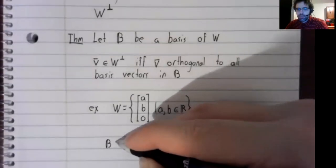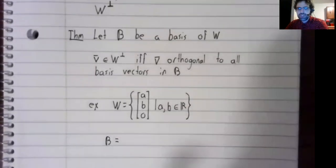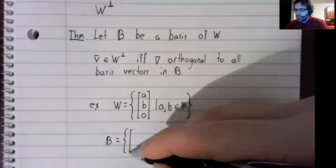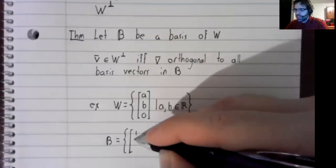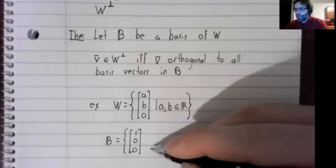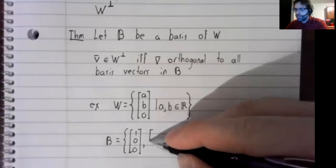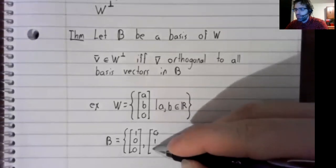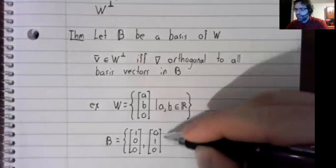A basis of W is given by the vectors one, zero, zero, and zero, one, zero.